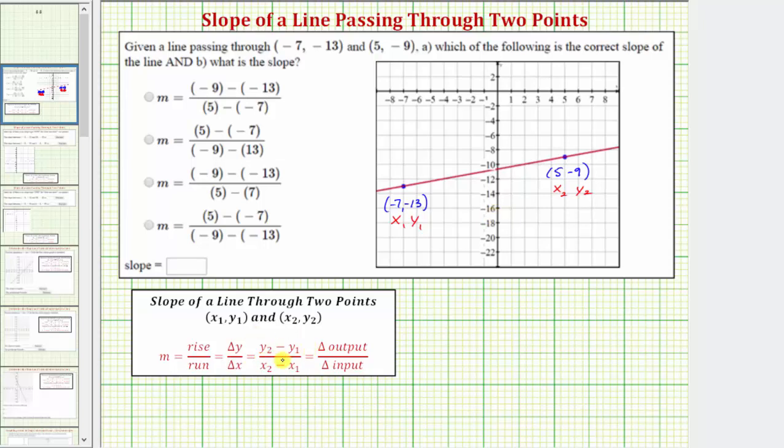And now we can use the slope formula to find the slope of the line. So we'd have the slope m equals y₂ minus y₁ is -9 minus -13, divided by x₂ minus x₁ is 5 minus -7.